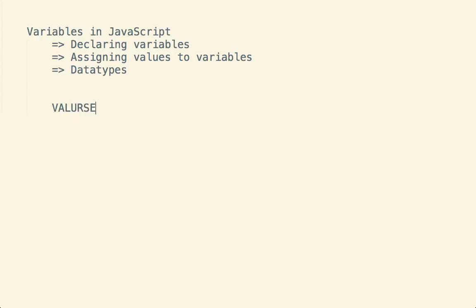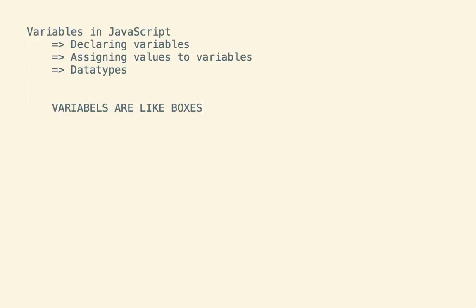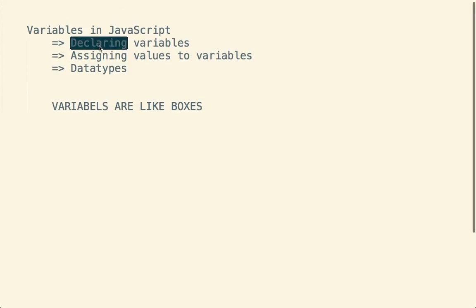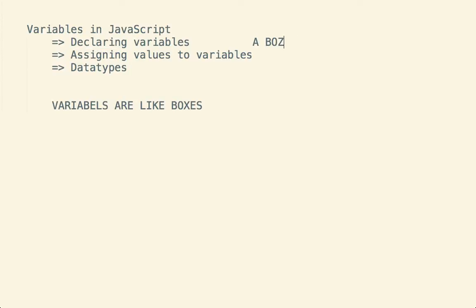Variables are like boxes. Just like a box - this zero represents a box. In this box, you can put anything. We have a box here and we'll assign this box some kind of value. Variables are like boxes in which you can put any kind of value. And what is a value? A value is something that is of some kind of data type.